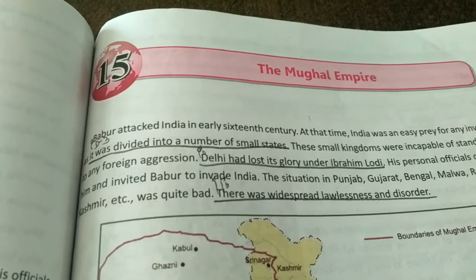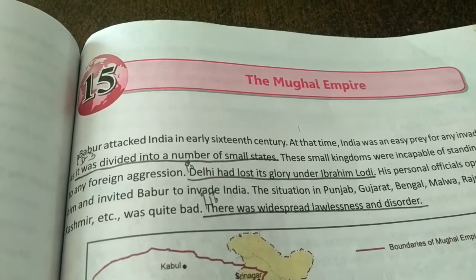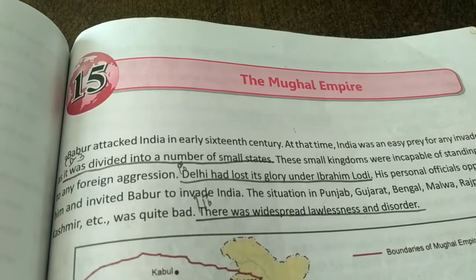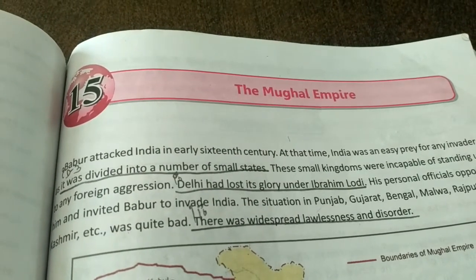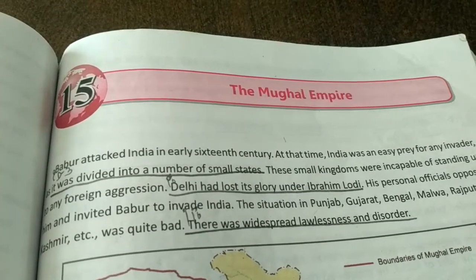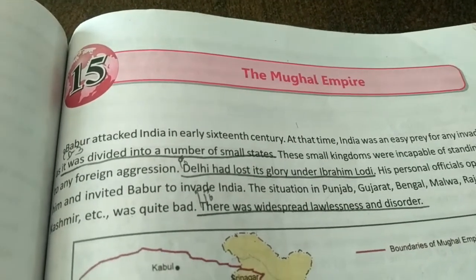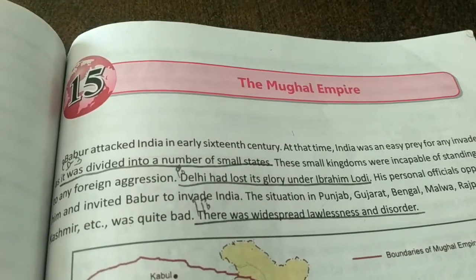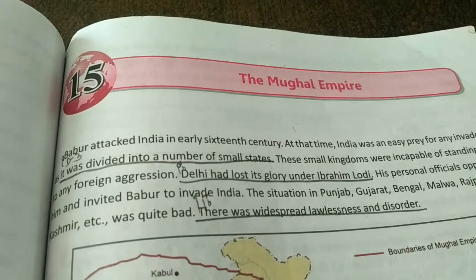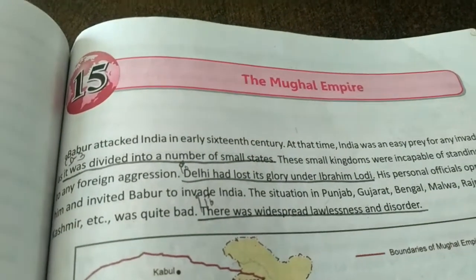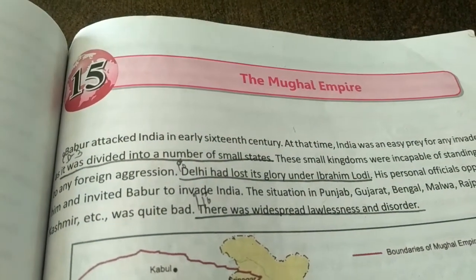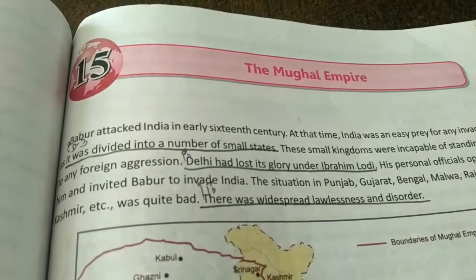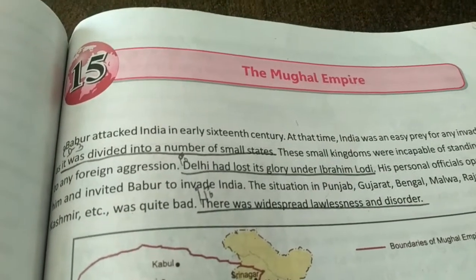The Mughal Empire began after the end of the Delhi Sultanate, where the last rulers were the Lodis. The Lodi dynasty was started by Bahlul Lodi, then Sikandar Lodi, and then Ibrahim Lodi from 1517 to 1526. Ibrahim Lodi was not a capable ruler. Babur came to India and fought Ibrahim Lodi, defeating him in the First Battle of Panipat in 1526 CE.